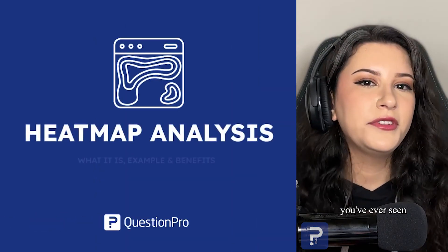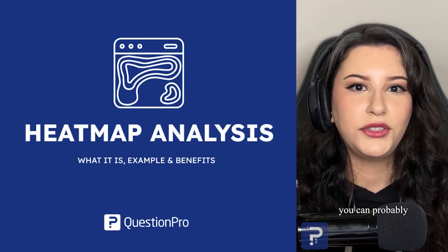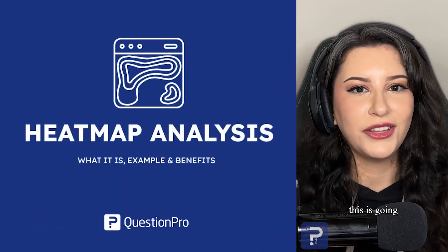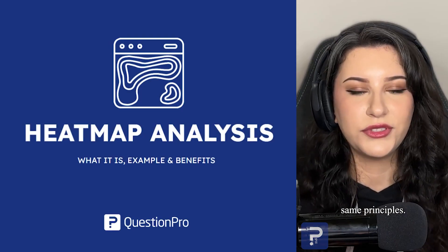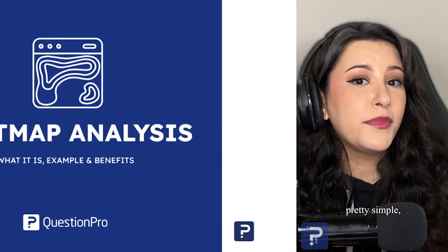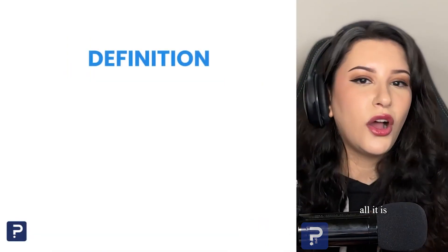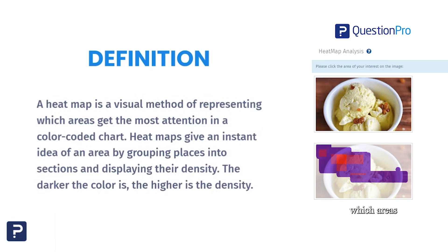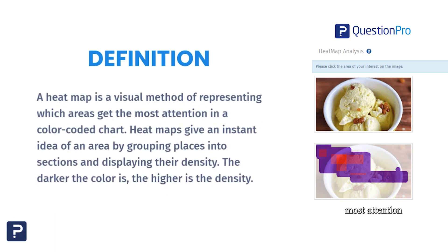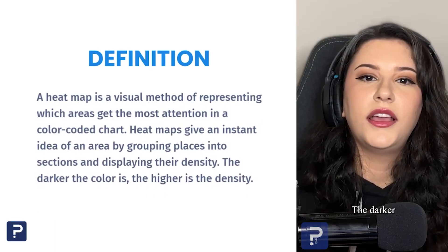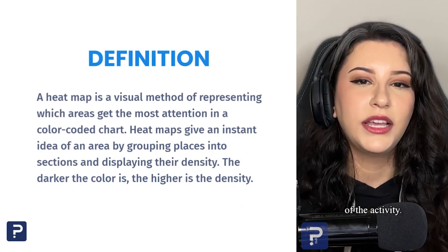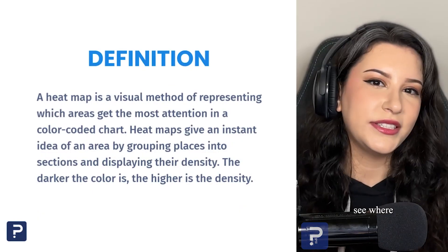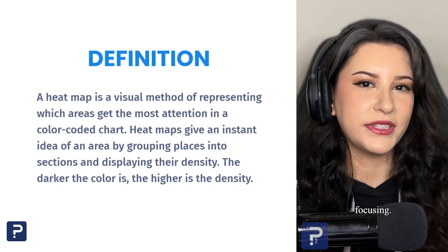Now if you've ever seen a weather report, you can probably tell that this is going to be based on the same principles. So a heat map is pretty simple — all it is is just showing you exactly which areas are getting the most attention with color coding. The darker the color, the higher the intensity of the activity. This helps you quickly see where people are focusing.